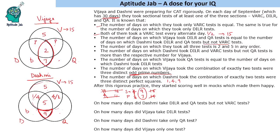With A equal to 5, and the all-three value being 2, the sum so far for Vijaya's non-VARC sections is 5 plus 2 equals 7. The two odd prime values P must add to 8. Thinking of two odd primes adding to 8, we get 3 plus 5 equals 8. So those two regions are 3 and 5, and both circles add to 15 as required.